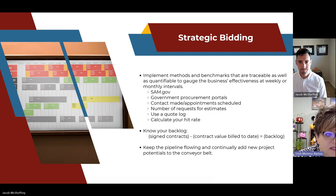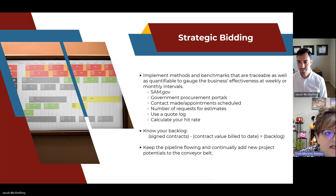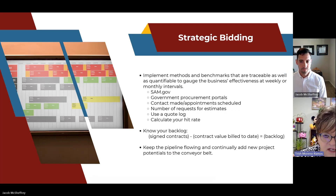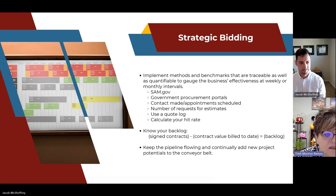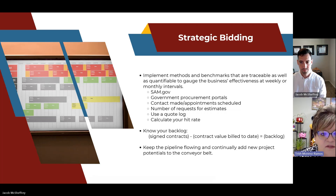Implement trackable and quantifiable benchmarks to gauge effectiveness on weekly or monthly levels. Track SAM.gov and other government procurement portals, contacts made, appointments scheduled, and number of requests for estimates. Use a quote log to calculate your hit rate on how successful your quotes are. Also know your backlog — signed contracts minus contract value billed to date. Keep that pipeline flowing by continuously adding new project potentials so you don't have big gaps in activity.